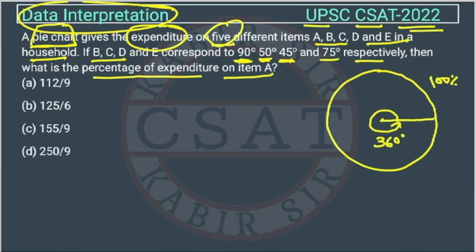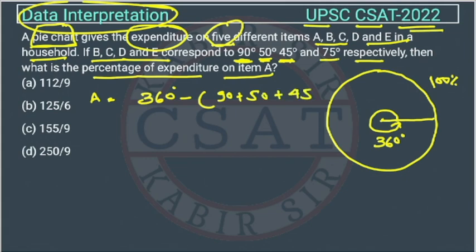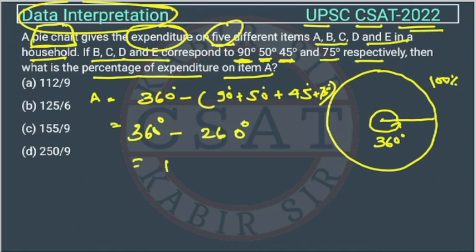So just find out the angle of A. Total angle we have is 360 degrees. From 360 degrees, if we subtract the expenditure corresponding to B, C, D, E — we will add them and minus from 360. So 360 minus (90 + 50 + 45 + 75) = 360 minus 260 = 100 degrees. So the angle of A is 100 degrees.